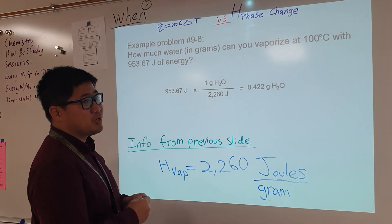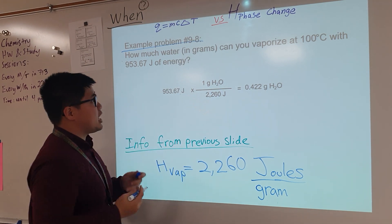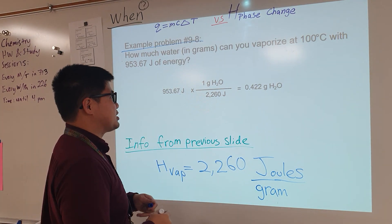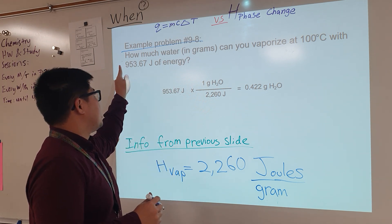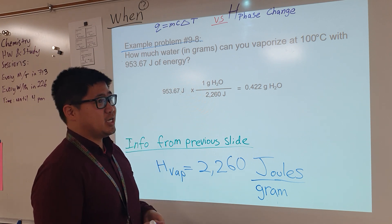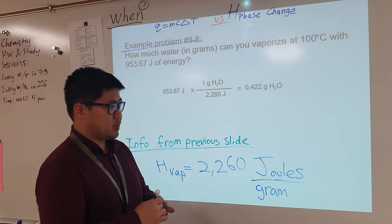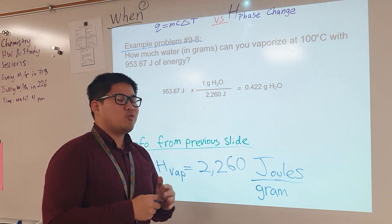All right, example problem 9-8. The question asks us, how much water in grams can you vaporize at 100 degrees Celsius with 953.67 joules of energy? And so we have to think to ourselves,